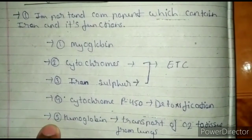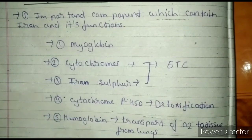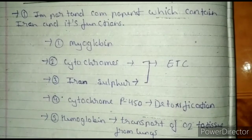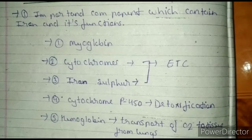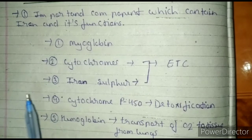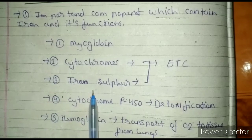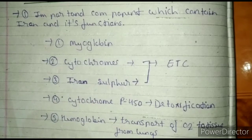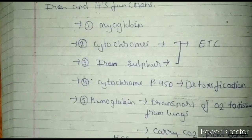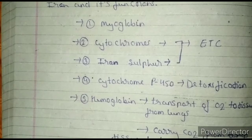We will look at important compounds which contain iron and their functions. Certain compounds contain iron — these are myoglobin, cytochrome, iron-sulfur protein, cytochrome P450, and hemoglobin. These five compounds contain iron in their structure, in which cytochrome and iron-sulfur protein help in the electron transport chain for ATP production.